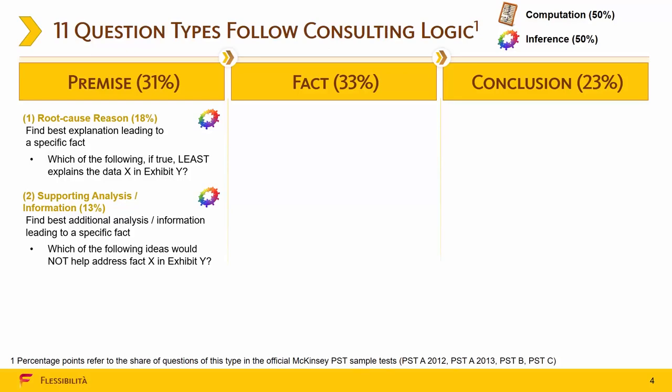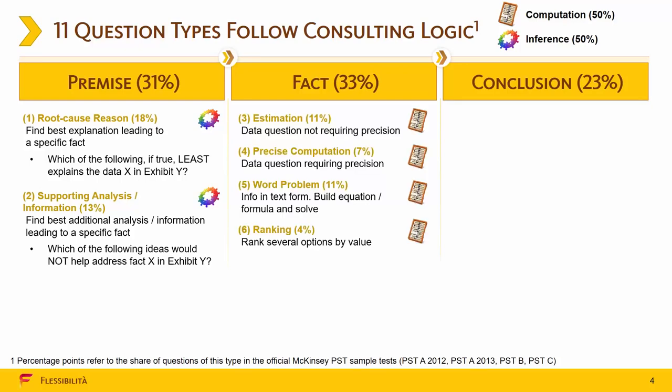The second subgroup is supporting analysis or supporting information. In these questions you need to find best additional analysis or best additional information leading to a specific fact. For example, which of the following ideas would not help address Fact X in Exhibit Y? Fact questions fall into four subgroups. The first one is estimation, which is a data question not requiring precision. The second is precise computation, obviously a data question requiring precision. And then there is word problem, which is building an equation or formula and solving it based on the data in the text, in Exhibits or tables.